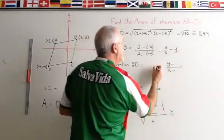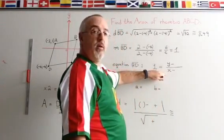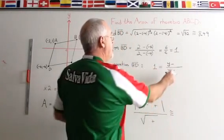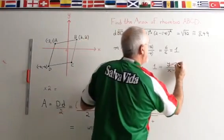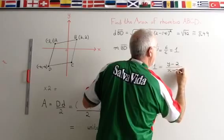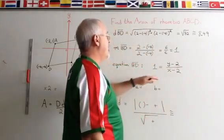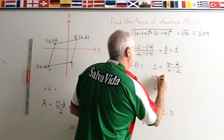Now to find the equation, I take that slope and I plug it back into the slope formula. And I put in one of the points of B, D. I'm going to use 2, 2. And I derive the equation. The equation will be Y equals X.